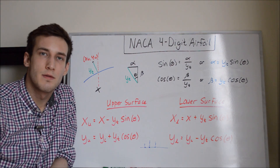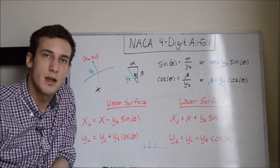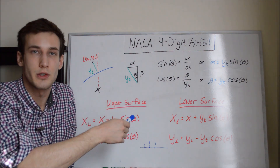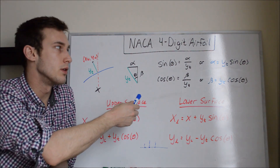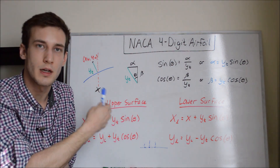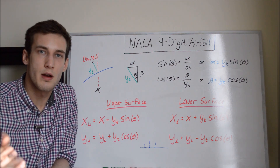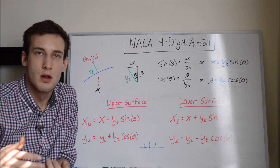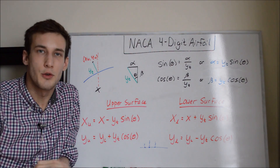In the next video I'm going to go over how to program a MATLAB code that will give you the airfoil shape based on your input — such as a NACA 2412 or NACA 0012 — and output the coordinates based on the number of grid points you specify. Thanks for watching.